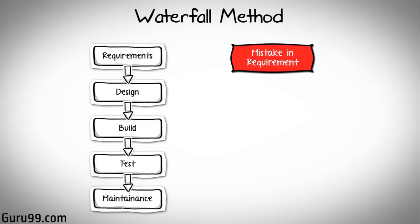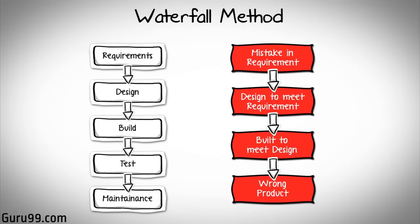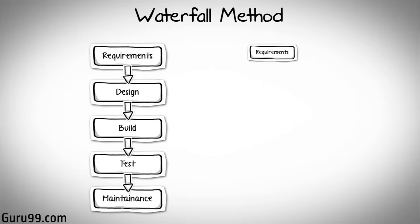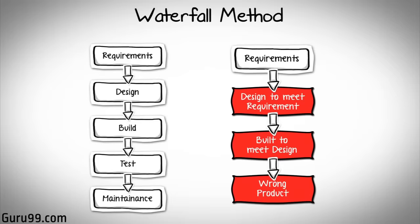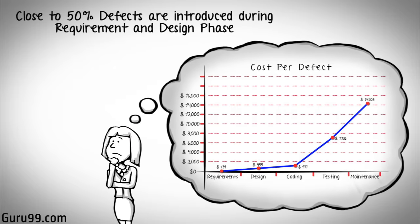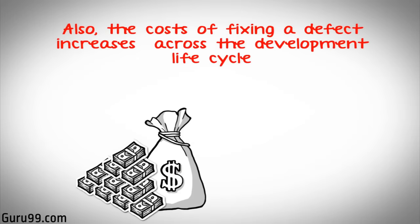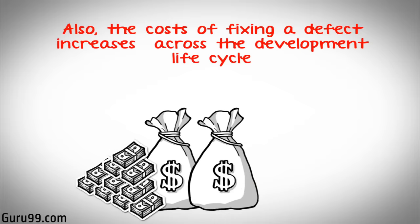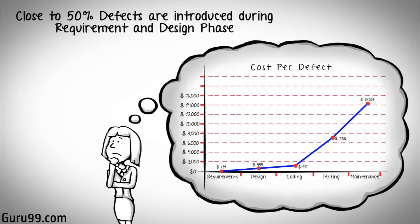But if you are working on a large project where the systems are complex, it's easy to miss key details in the requirements phase itself. In such cases, an entirely wrong product will be delivered to the client. Or if you manage to note the requirements correctly but make serious mistakes in design and architecture, you will have to redesign the entire software. Assessments of thousands of projects have shown that defects introduced during requirements and design make up close to half of all defects. Also, the costs of fixing a defect increases across the development lifecycle — the earlier a defect is detected, the cheaper it is to fix. As they say, a stitch in time saves nine.